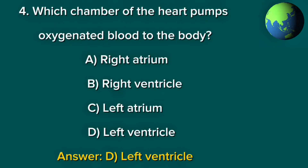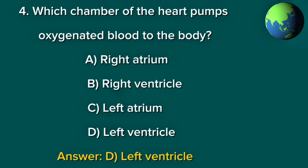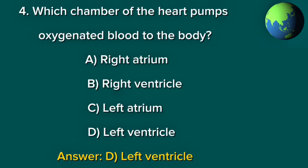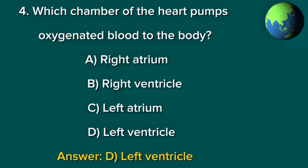Question 4. Which chamber of the heart pumps oxygenated blood to the body? A. Right atrium. B. Right ventricle. C. Left atrium. D. Left ventricle. Answer: D. Left ventricle.